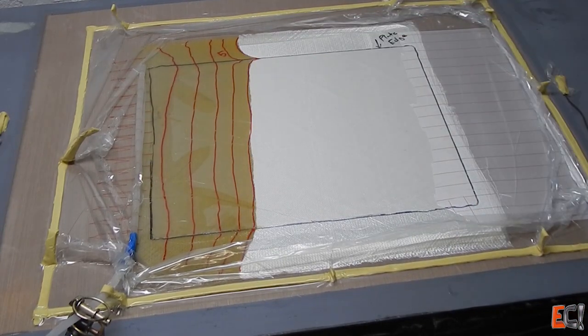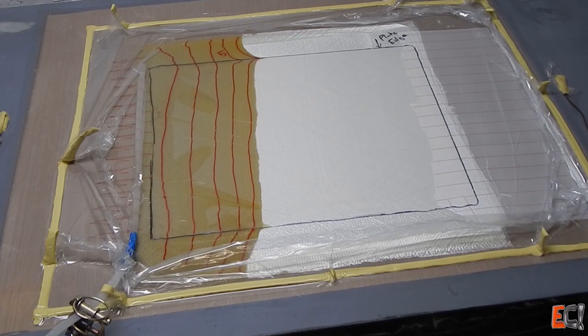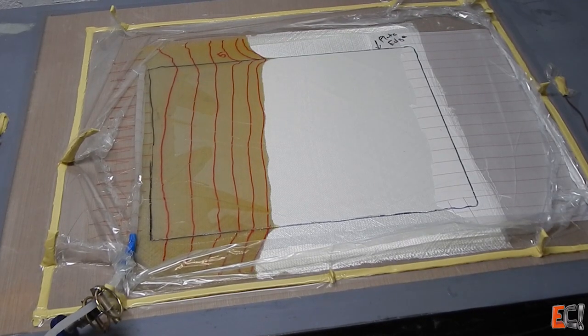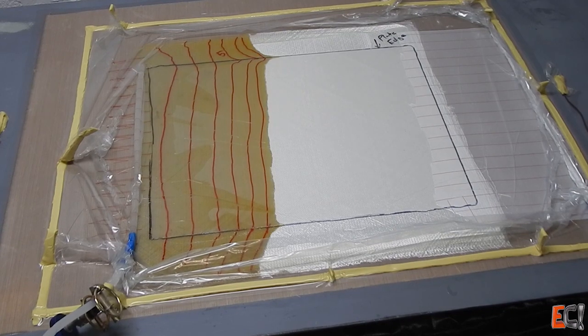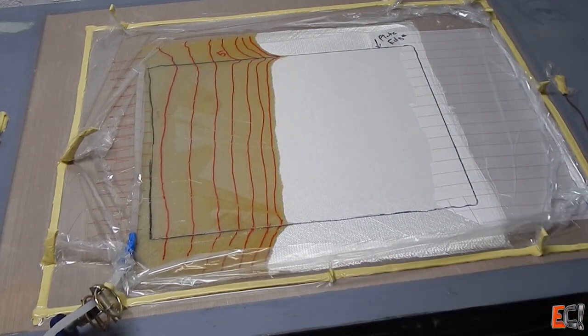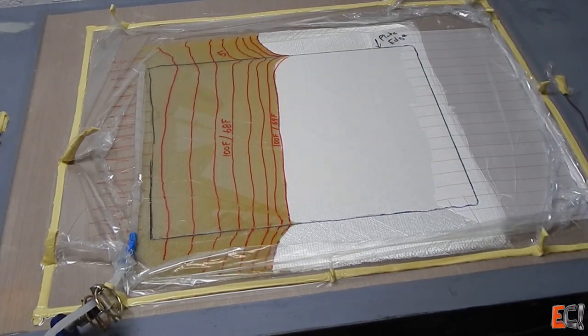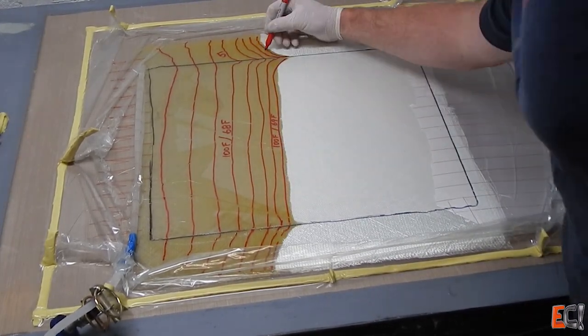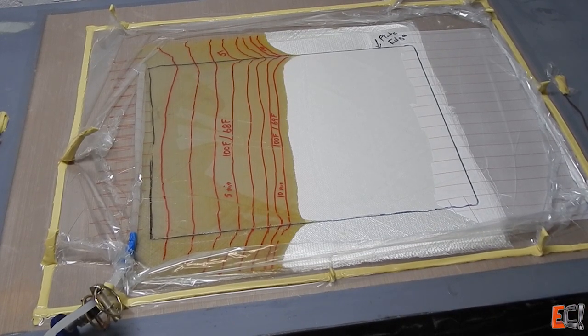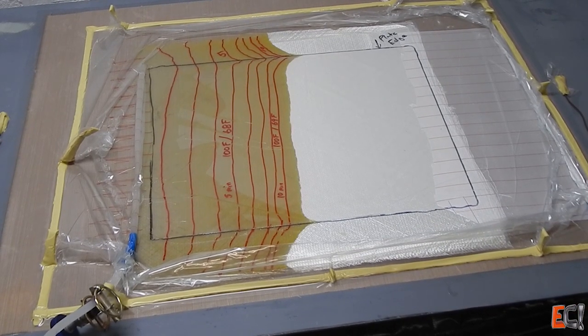As it got about a third of the way through, it started to slow down. I'm not sure whether this was because of permeability or resin flow. I got the sense that the inlet hose could have been bigger, it was a pretty small hose. The next couple of minutes really slows down, and I started marking it every five minutes.